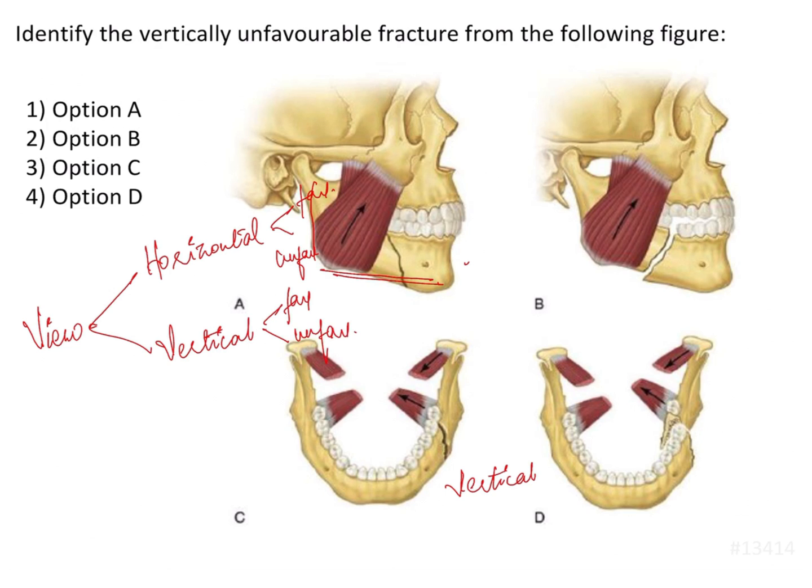How do we identify whether a fracture is vertically favorable or unfavorable? It depends on two factors: one is the mechanism or the physics of the muscles that act on the bone, and the second is the direction of the fracture line.